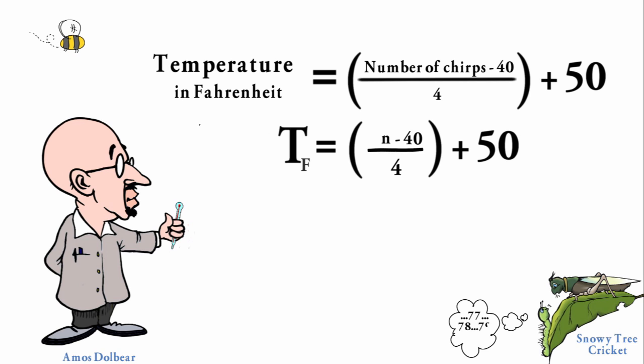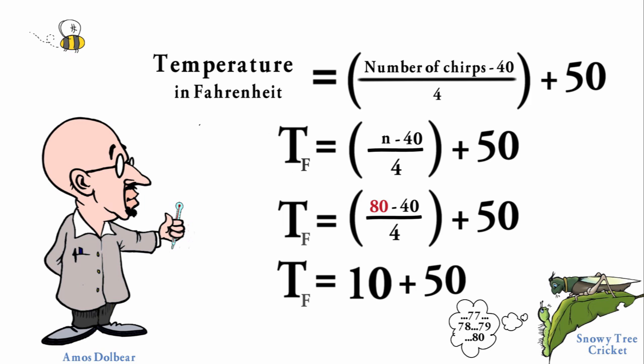If I counted 80 chirps in one minute I could substitute 80 in for the variable N. If we want to evaluate this equation we would subtract 40 from 80 getting 40, then divide by 4 to get 10, and then add 50 giving me the temperature of 60 degrees Fahrenheit.